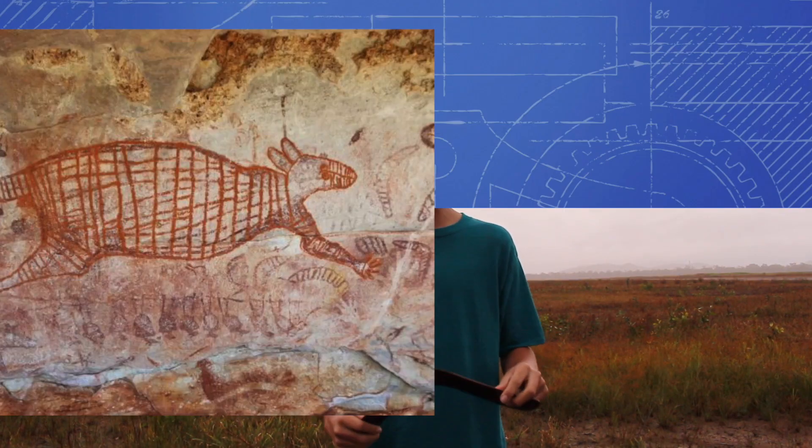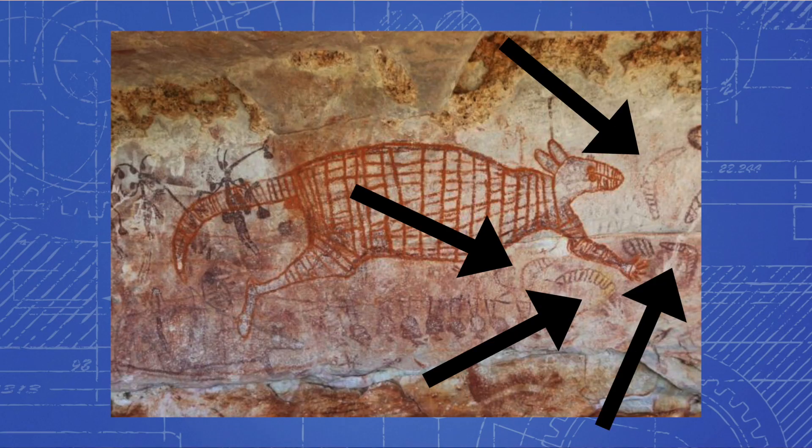Boomerangs have long been a symbol of aboriginal culture. The aboriginals, or the native people in Australia, have had drawings that included these boomerangs that are over 50,000 years old. But back then, the boomerangs weren't designed to be thrown and caught back — they were designed for hunting instead. It's only been recently that people have tried to throw boomerangs and catch them back.